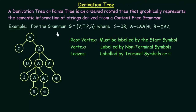Here we have an example grammar given. The grammar is defined as G equal to V, T, P, and S. These are the four tuples of the grammar where V is the variables or non-terminal symbols, T is the terminal symbols, P is the set of production rules, and S is the start symbol.